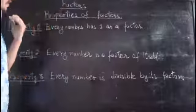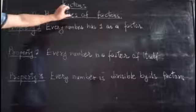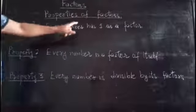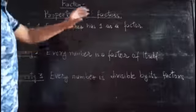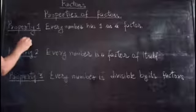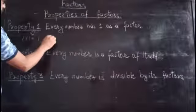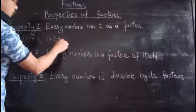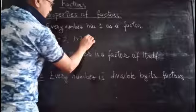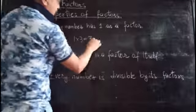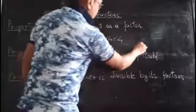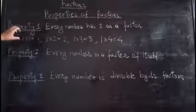Good morning. Today we are going to talk about properties of factors. Property one: every number has one as a factor. For example, one times one is one, one times two is two, one times three is three, one times four is four, and so on. We see that one is a factor of all these numbers.